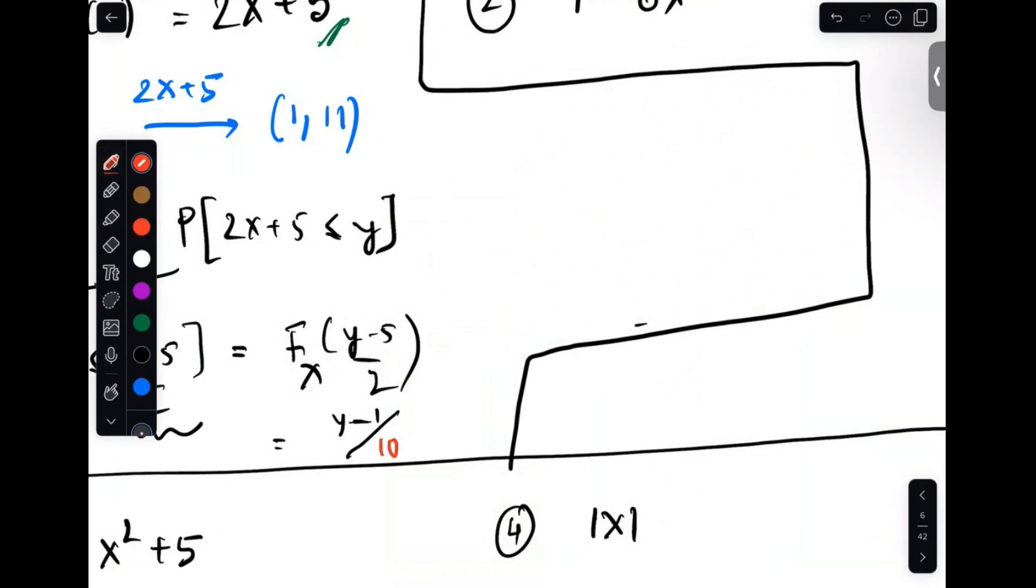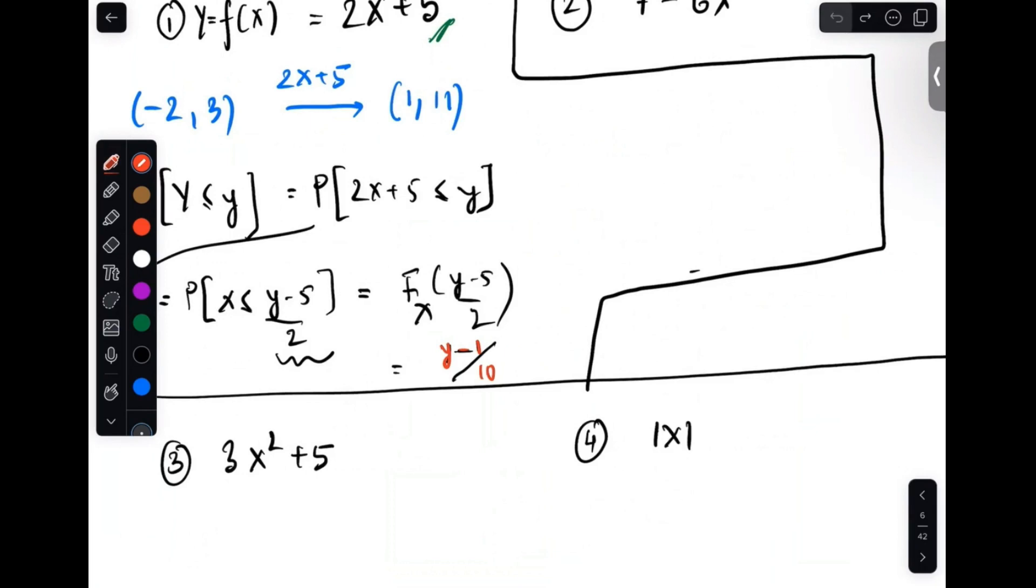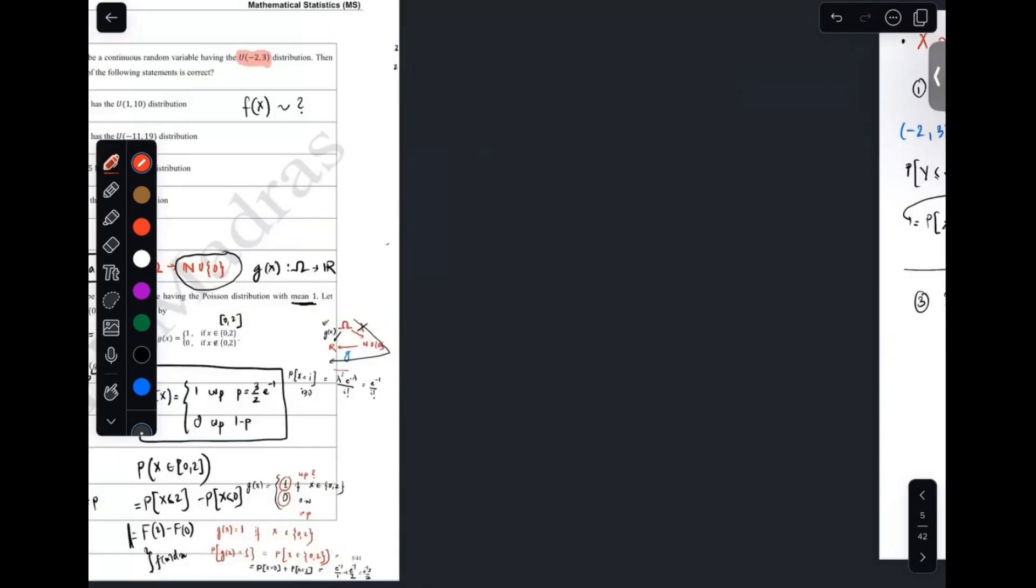Now, if you replace that, you will get y minus 1 by 10 because you have got the effects. If you want to calculate f of y, y is nothing but y minus 1 by 10. If you want to for y between 11 and greater than 1, right? Now if you want to do a derivative of it to get the PDF, and of course before that it's 0. So if you do the derivative of it, you will get 1 by 10 for 11 and 1 and 0 otherwise. You can prove it, it's simple by doing the derivative. So you can see it's a constant function, which means it's uniform in 1, 11.